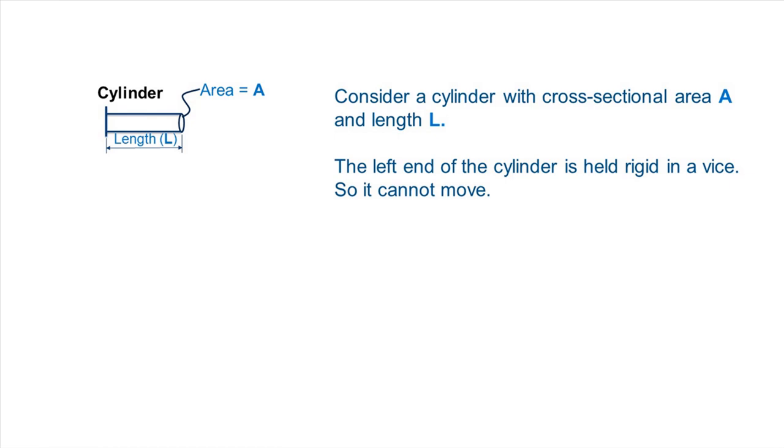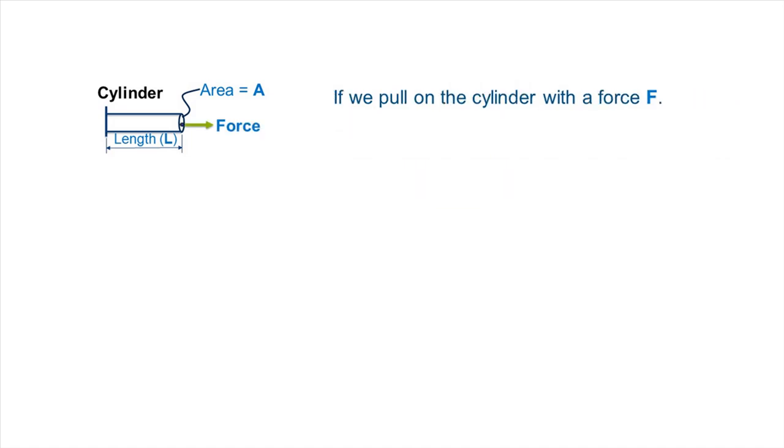Instead of a simple spring, let's consider a cylinder with cross-sectional area A and length L. The left end of the cylinder is held rigid in a vise, so it cannot move. If we pull on the cylinder with a force F, the cylinder will elongate, and the right end will displace by some amount U.